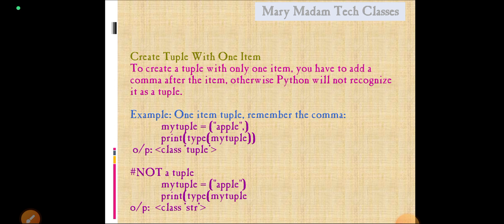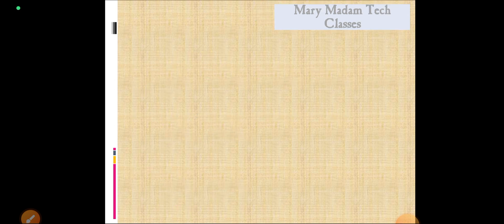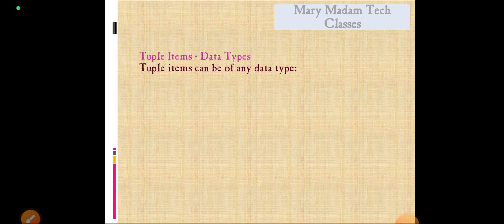Example 1: my tuple is equal to apple with a comma. I want to print the tuple type. Here it shows the class is a tuple. Example 2: my tuple is equals to just double quotations with only one item mentioned but not given a comma. I want to print the type of my tuple. It gives only a string type, but not the type class tuple.